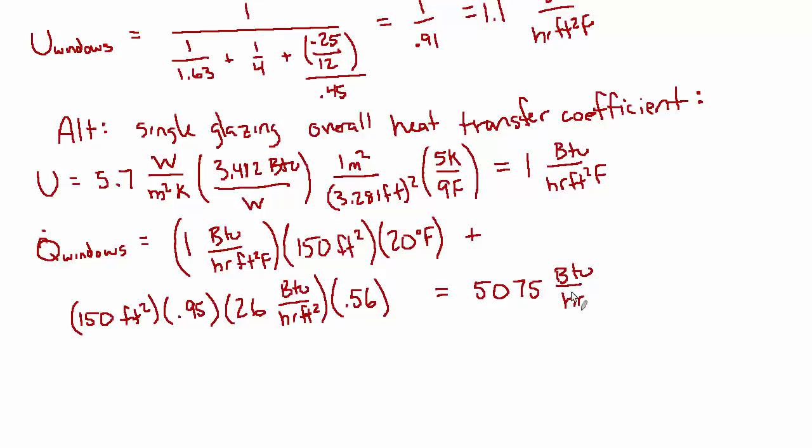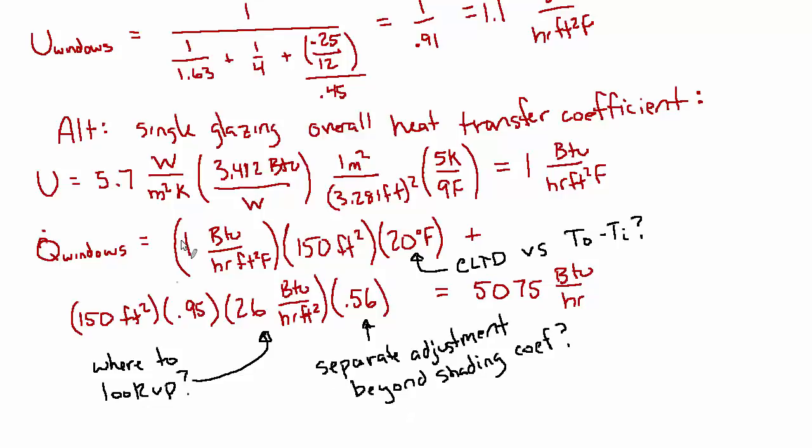This is coming from a lookup table. And the value that comes out of all that is 5075 BTU per hour. So it is a significant heat transfer through the windows. I just want to note down some of these questions in a different color. So that's which value should be plugged in here. Should it be the cooling load temperature difference or should it be the actual temperature difference? And then where do you look up the solar load factor? And then what is this separate adjustment above and beyond the shading coefficient? So those are some questions.